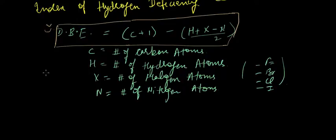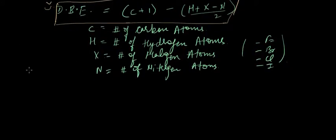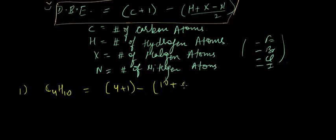Let's have a look. We have a compound like C4H10. We need to calculate the DBE of this compound. As per the formula, C is 4 plus 1 minus H is 10 plus X is 0, N is 0, divided by 2. This gives me 5 minus 5, hence the DBE is 0.